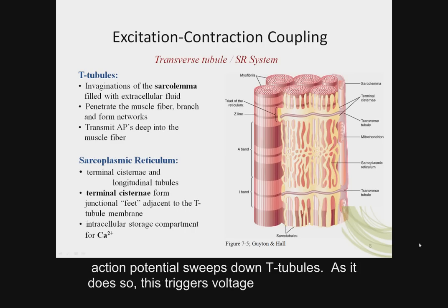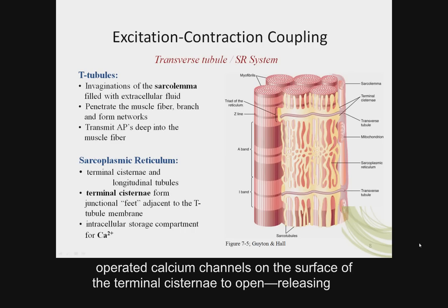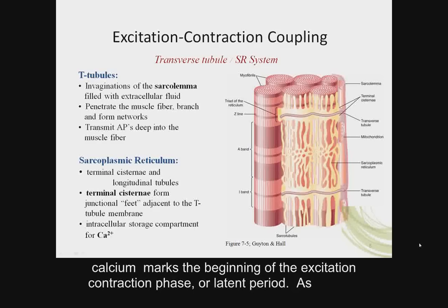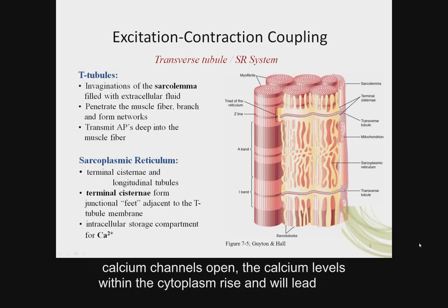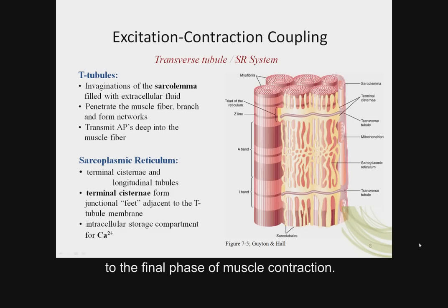As the action potential sweeps down T-tubules, this triggers voltage-operated calcium channels on the surface of the terminal cisternae to open. Releasing calcium marks the beginning of the excitation-contraction phase, or latent period. As calcium channels open, the calcium levels within the cytoplasm rise and will lead to the final phase of muscle contraction.